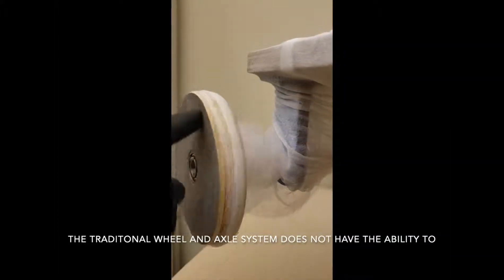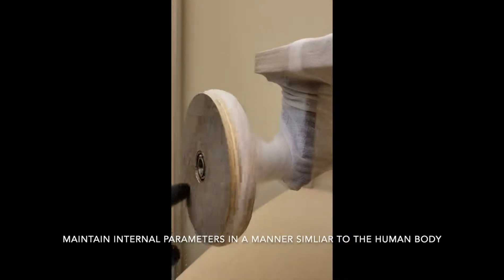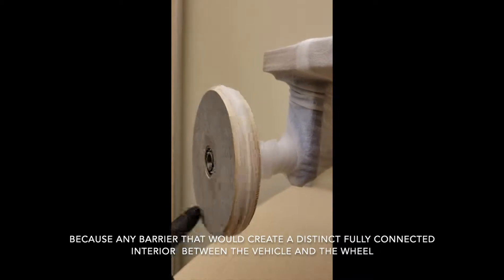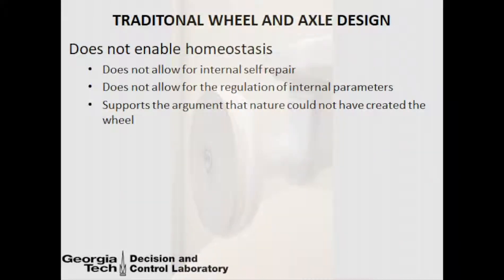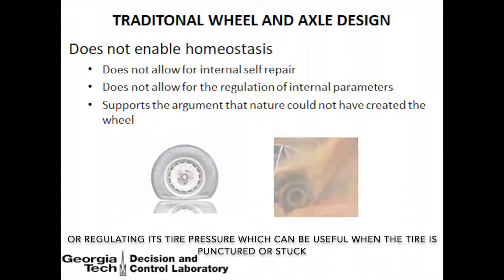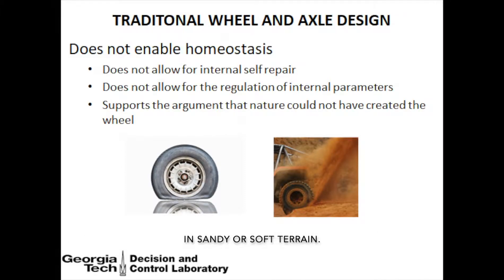The traditional wheel and axle system does not have the ability to maintain internal parameters in a manner similar to the human body because any barrier that would create a distinct fully connected interior between the vehicle and the wheel would tear or resist the motion of the wheel once the wheel rotates forward. The lack of this ability hinders the traditional wheel design from repairing itself from the inside or regulating its tire pressure, which can be useful when the tire is punctured or stuck in sandy or soft terrain.